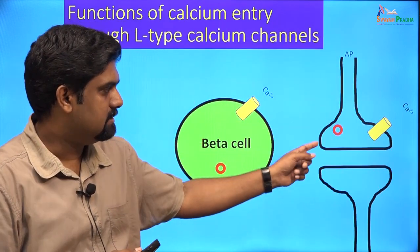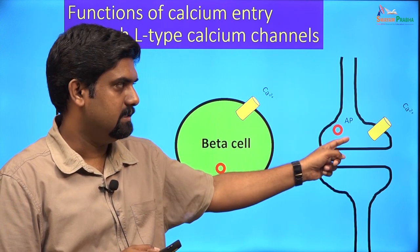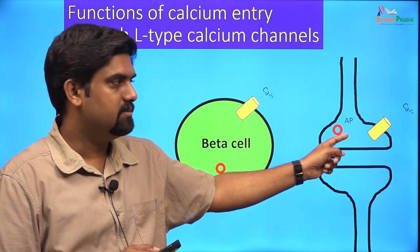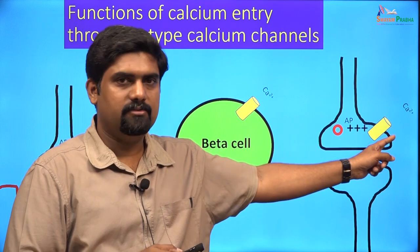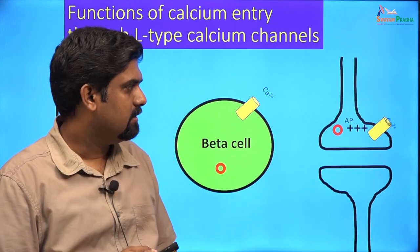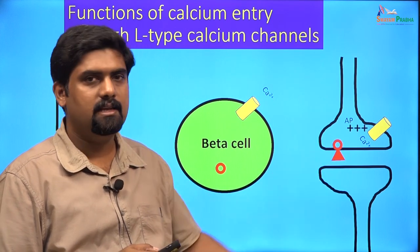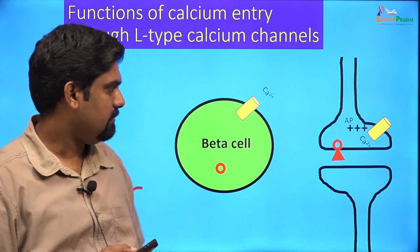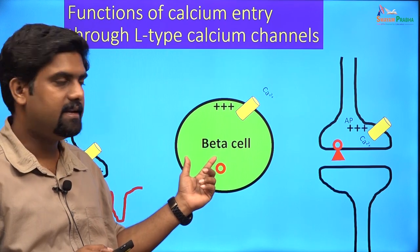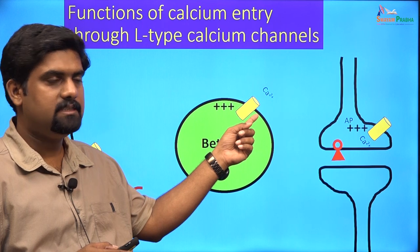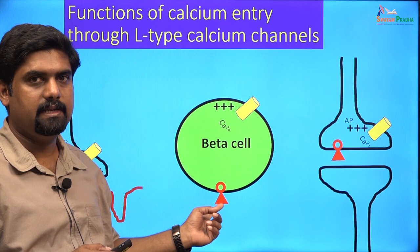At the synapse, the action potential reaches the presynaptic nerve terminal, causing depolarization that opens L-type calcium channels, allowing calcium entry. This leads to exocytosis of vesicles containing neurotransmitters and neuronal transmission. Similarly, in beta cells of the islets of Langerhans, depolarization opens L-type calcium channels causing calcium entry and exocytosis of vesicles containing insulin.